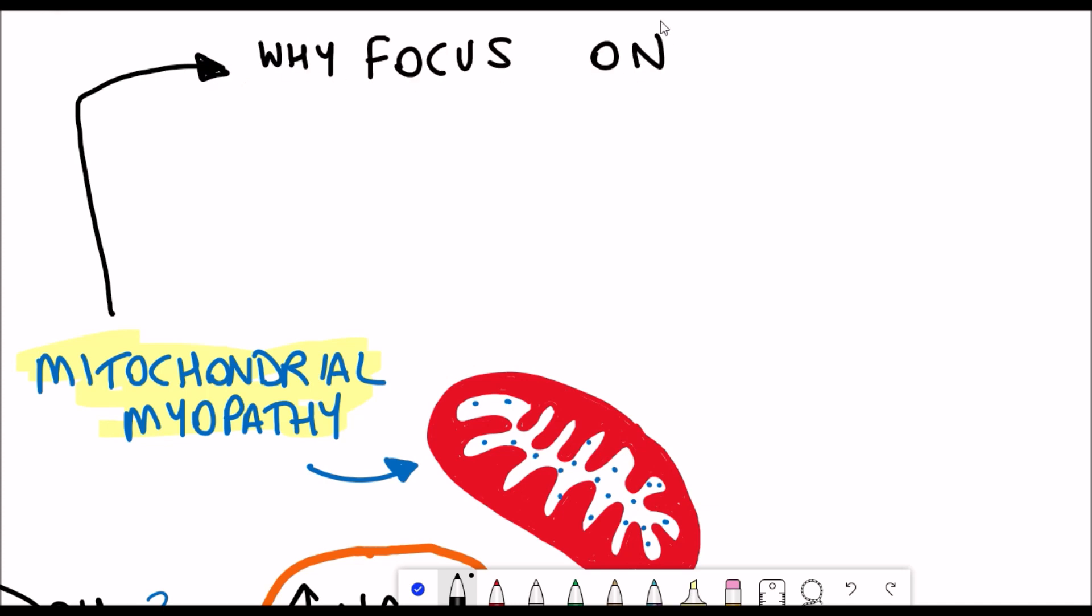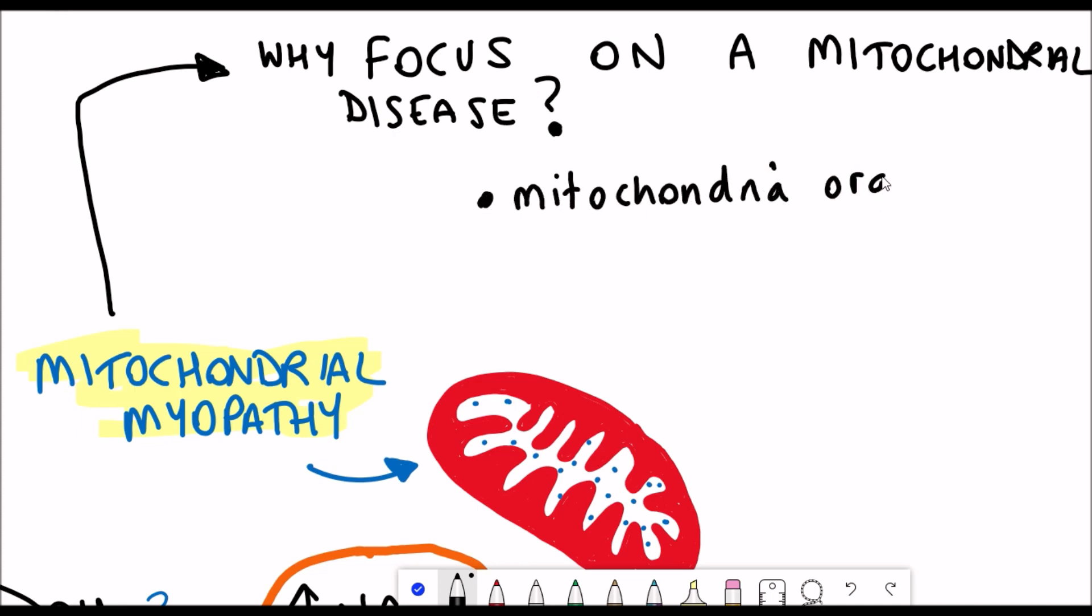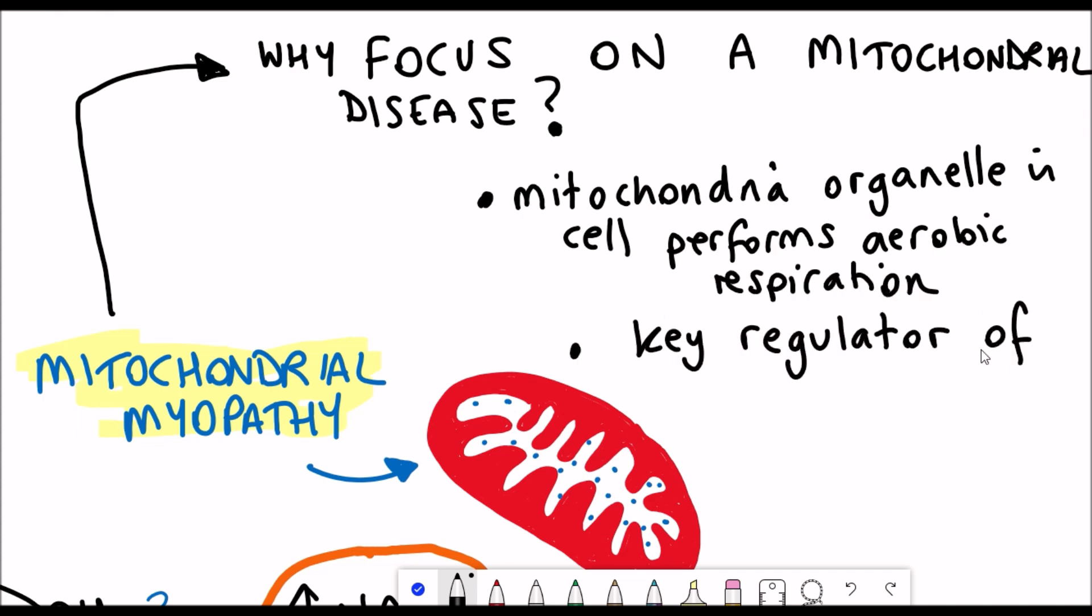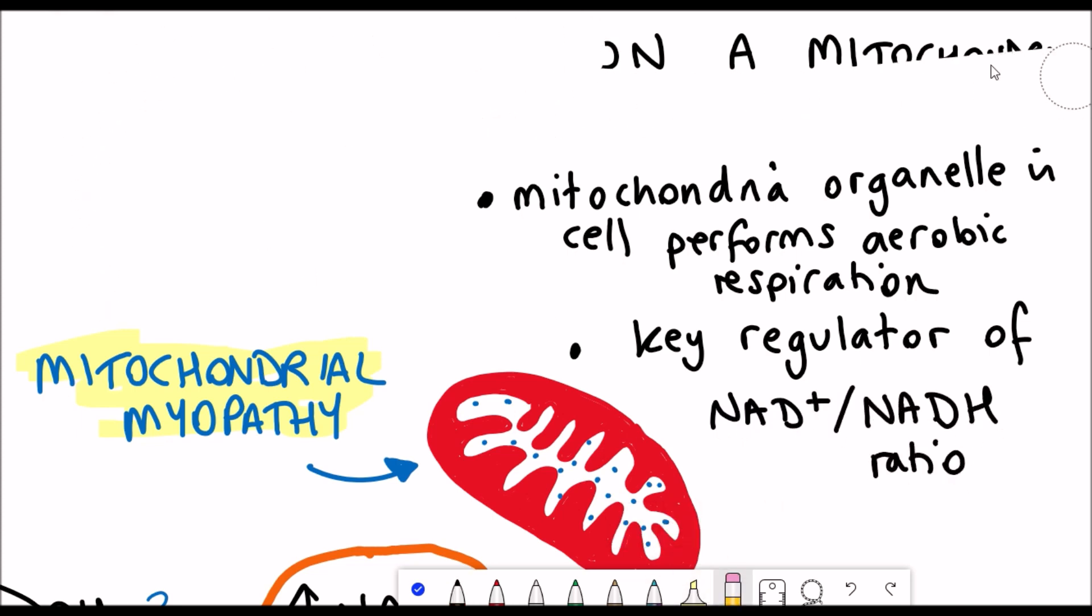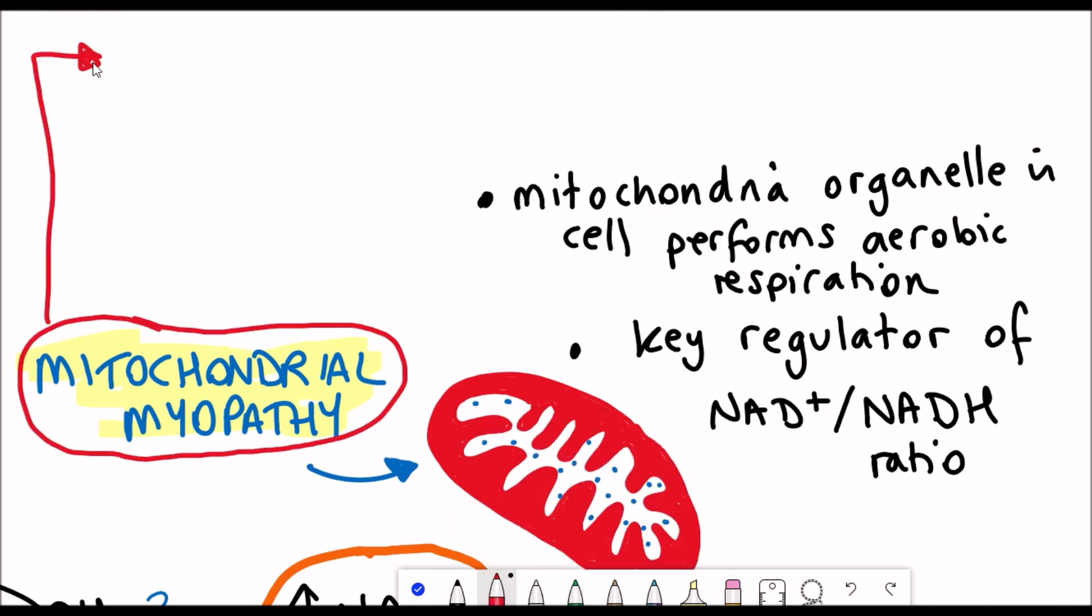In this clinical trial they were using niacin to see if it had an impact on alleviating the symptoms of mitochondrial myopathy. So why did they focus on a mitochondrial disease? Well the mitochondria is an organelle in a cell that performs aerobic respiration and it's actually a key regulator of the NAD Plus to the reduced form of NAD Plus NADH ratio.